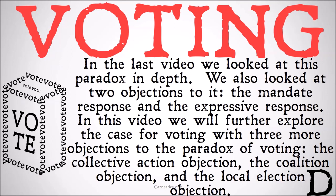In the last video we looked at this paradox in depth, and we also looked at two objections to it: the mandate response and the expressive response. In this video, we're going to further explore the case for voting, given that the U.S. election is coming up very soon, with three more objections to the paradox of voting: the collective action objection, the coalition objection, and the local election objection.